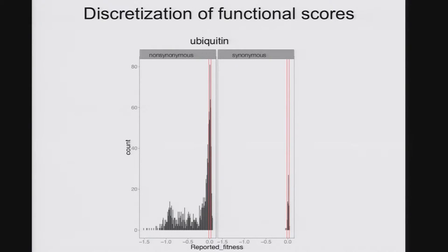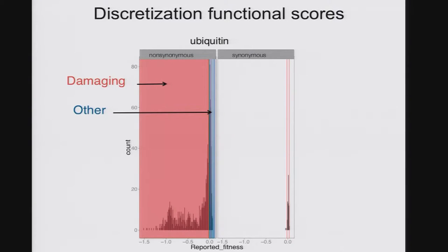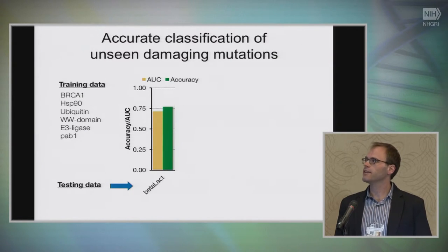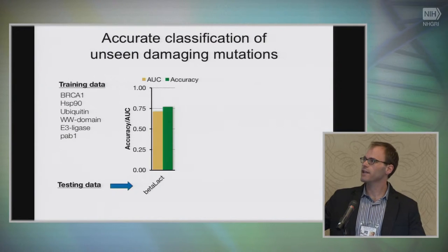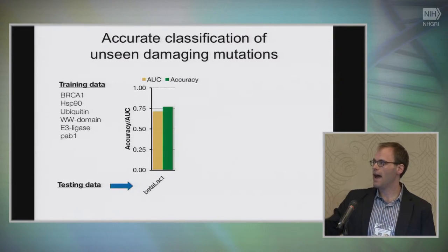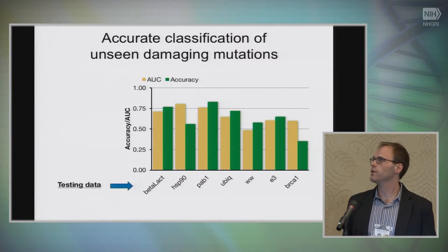We wanted to retreat to what we thought would be a slightly easier task: predicting the categorical effects of mutations — either damaging or not. What's nice about deep mutational scanning datasets is that in addition to getting the non-synonymous effects, you also get the synonymous effects essentially for free. That distribution is much narrower, so we can use it to define an interval within which mutations are expected to be damaging, and another within which we expect them to be like wild type or function-enhancing. We can discretize all our data this way, and lo and behold, most mutations are damaging — that's reasonable. We then trained classification models, evaluated by area under the ROC curve and model accuracy, leaving one dataset out for all seven proteins.